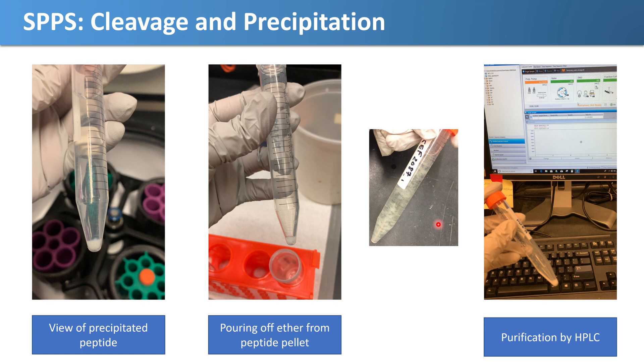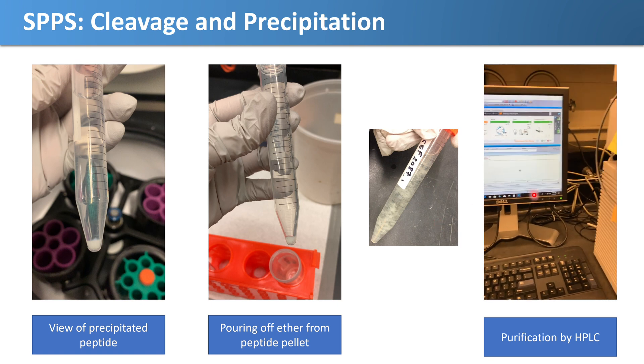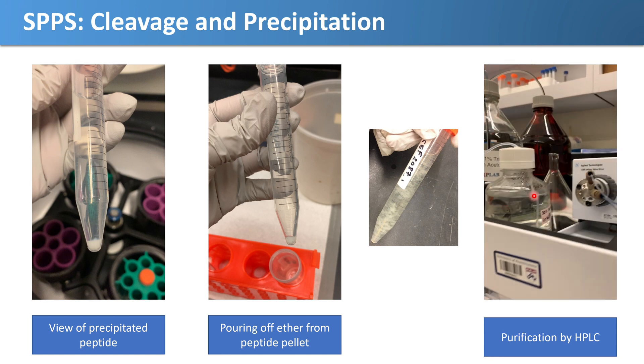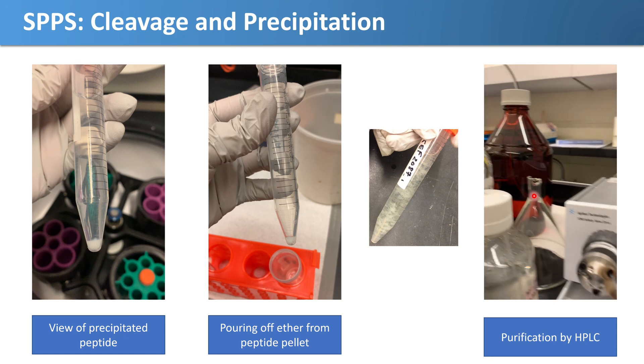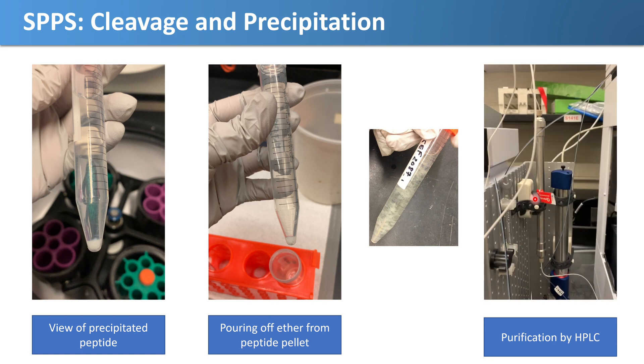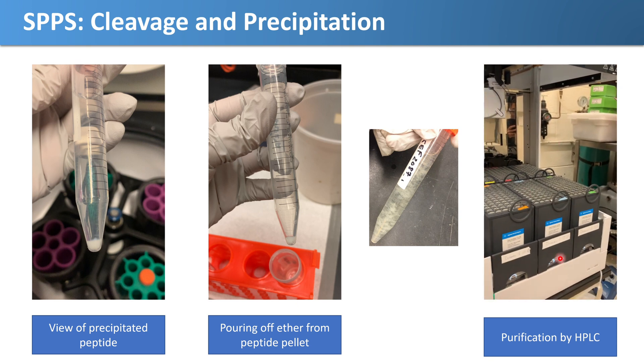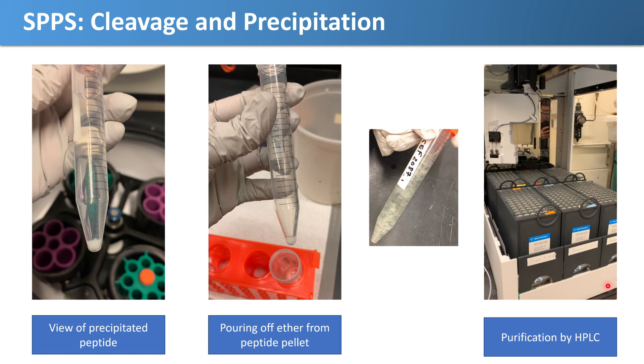At this point we are ready to purify, and we do this with an HPLC system with an automated fraction collector here. Hopefully at that point you're able to isolate your pure product, and then you're able to perform whatever experiments you want to. We hope you guys found this informative, showing you how we do it in the EJP lab. Thank you very much for watching.